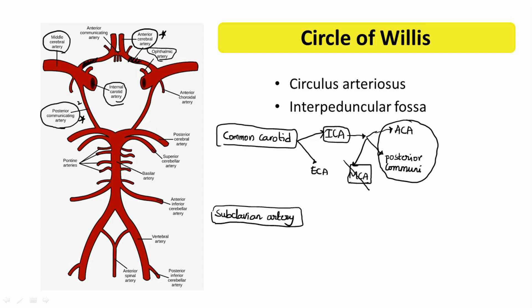Take note: the middle cerebral artery does NOT take part in the formation of the circle of Willis. Now let us go to the subclavian part. The subclavian artery gives rise to the right and left vertebral arteries — the vertebral arteries are branches of the subclavian artery. The vertebral arteries unite together, and their union forms the basilar artery.